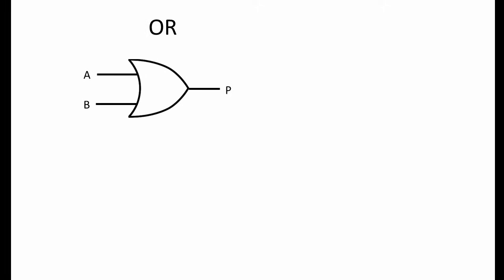Before we consider the construction of SR latches, let's remind ourselves of some fundamental logic gates. This is an OR gate, and this is the truth table that describes its behavior. Any combination of inputs A and B results in a 1 at output P, except when both inputs are 0, in which case the output is 0.